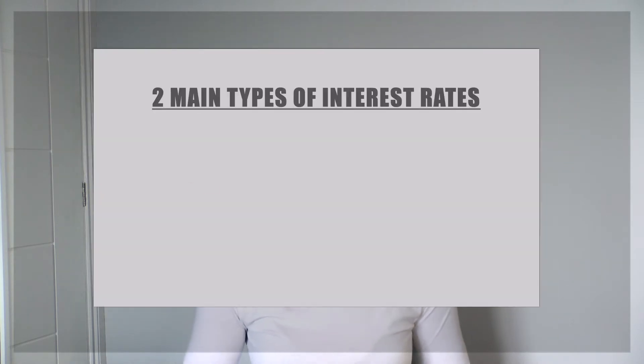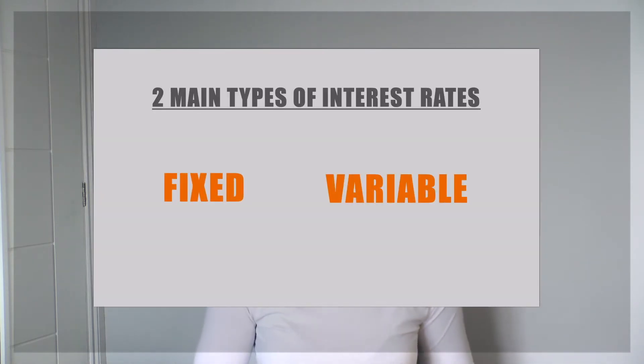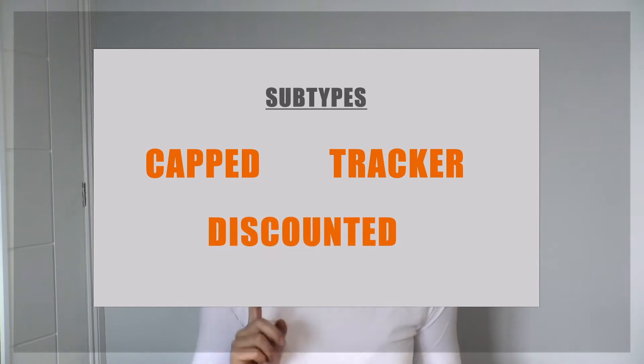To put it into simple terms there are two main types of interest rates and those are fixed and variable. There are three subtypes to those rates that I'm going to go over in more detail shortly, and those subtypes are your capped rate, your tracker, and your discount rate.